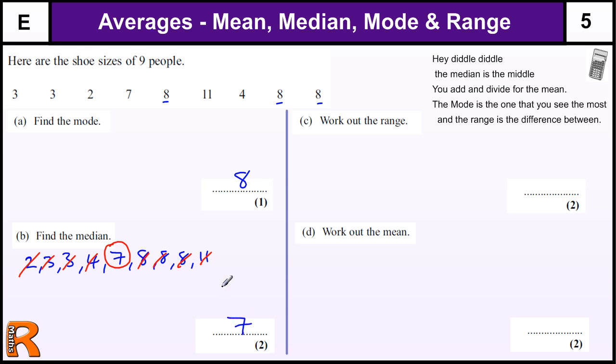Now, sometimes if there's an even number of numbers, you will get two numbers in the middle. So if there was an extra number on here, seven, eight would be in the middle. You would just go halfway between those two numbers. So if it was seven and eight, you would go seven point five. If you had two numbers that were the same in the middle, so you had two sevens in the middle, you would just go halfway between seven and seven, which is just seven. So hopefully you know how to do all those things, but remembering which one is which is the most important.